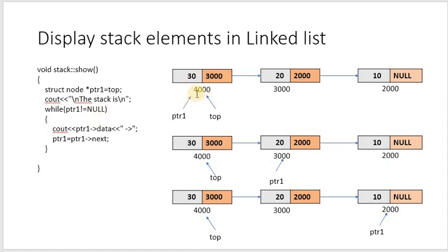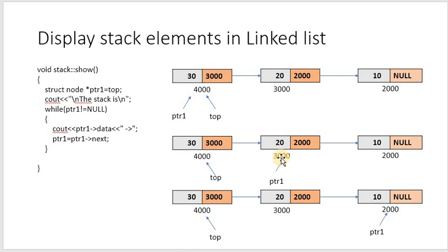We display the value at 4000: ptr->data is 30. Then it has to move to the second element. The address of the next node is already there in this node, so we assign ptr = ptr->next. That moves to the next element. The loop goes back and checks: ptr not equal to null — ptr is now 3000, which is not equal to null, so it's true.